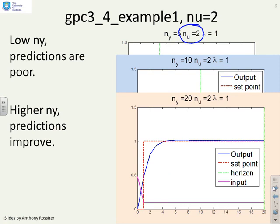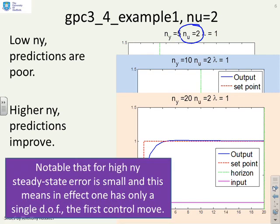Now here, please note, we're using a weighting of 1. So for high ny, the steady state error is small, and this means in effect that actually we've only got one degree of freedom. So although nu equals 2, one of your degrees of freedom has been used up to eliminate the steady state error because you have a high output horizon.